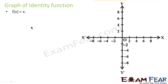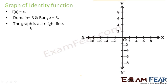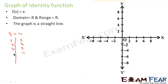Let's draw the graph of the identity function. It says f(x) = x, where domain and range are both real numbers. When f(x) = x, you are saying y = x. For x = 1, y = 1; for x = 2, y = 2; for x = 3, y = 3; for x = −1, y = −1; and for x = 0, y = 0.